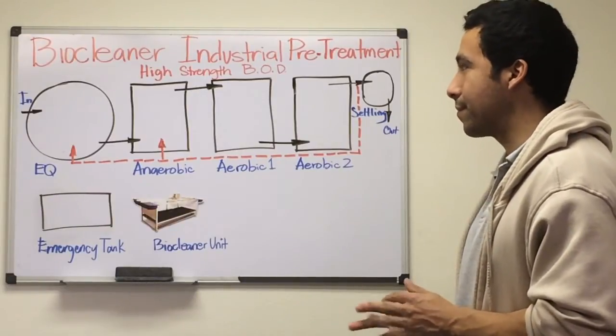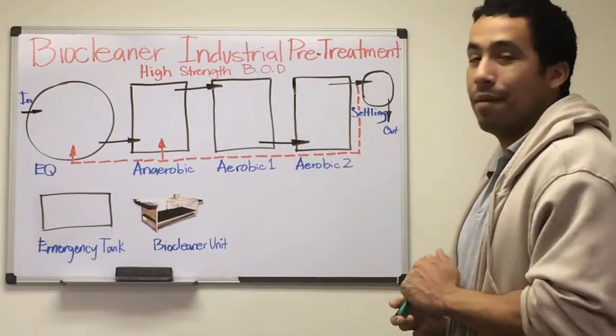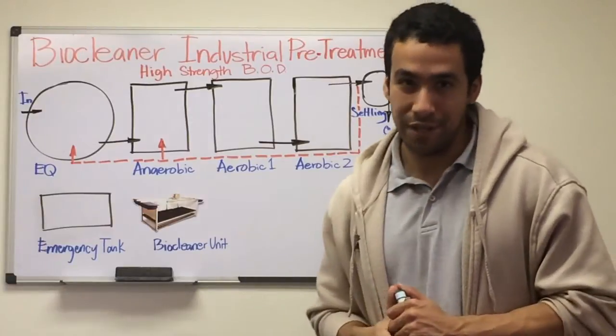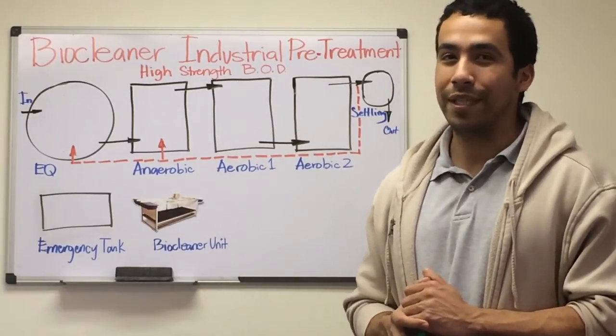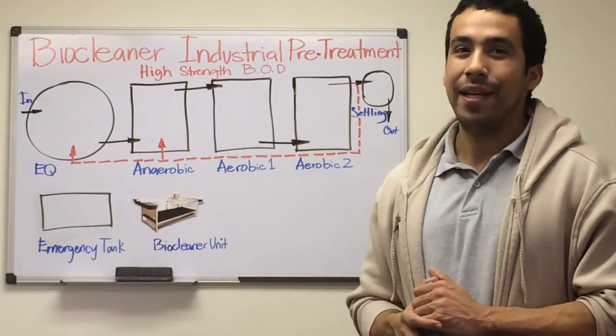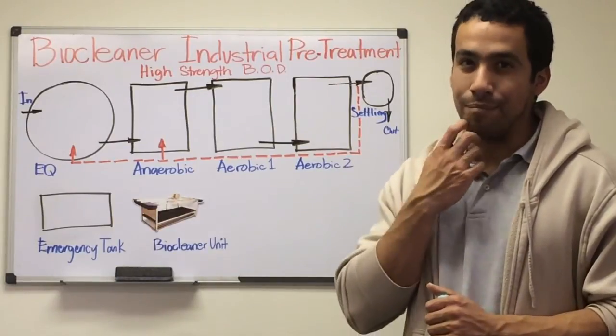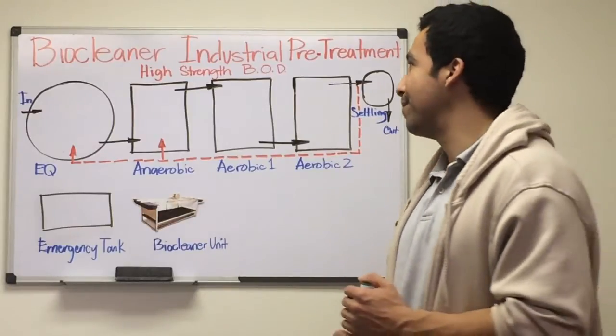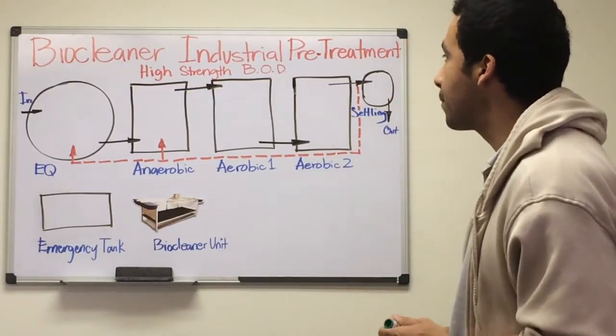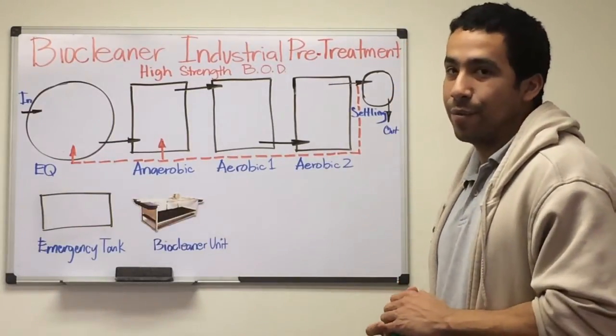What is BOD? BOD is the amount of dissolved oxygen that aerobic microorganisms can absorb in order to treat the organic matter in a body of wastewater. There are several variables to consider for industrial treatment with biocleaner.